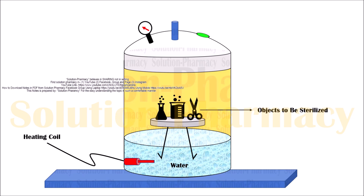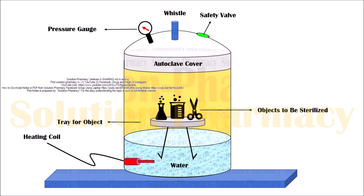And just like this, the label of the heating coil appears, then the tray for the object, and so on. This is how we can add animation to each part of a diagram already prepared using PowerPoint. Thank you very much for watching this video.